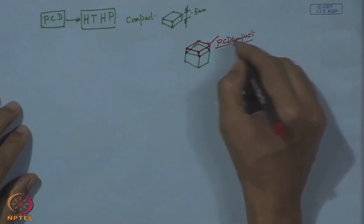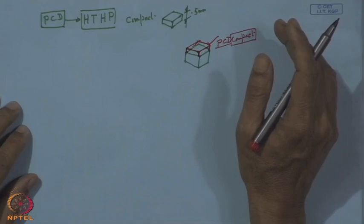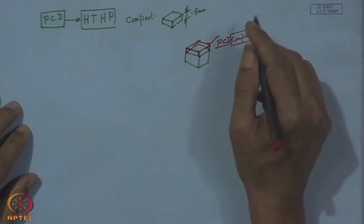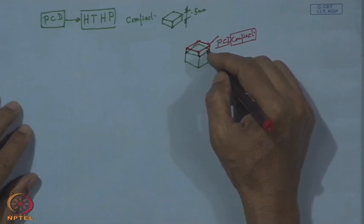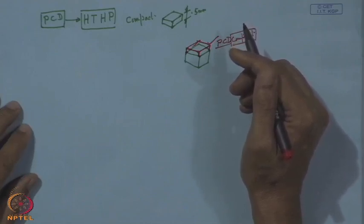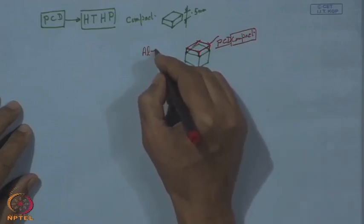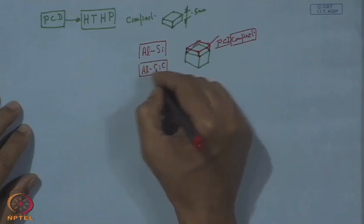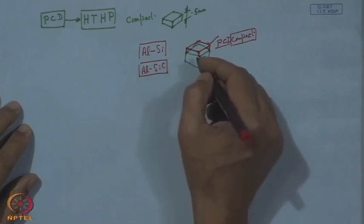The greatest advantage of PCD over natural diamond is that it has multi-directional crystallographic orientation, so the average toughness of this compact is greater than that of natural crystal. This can be used for various heavy-cut machining where high cutting forces are expected. It can be used for bulk machining of materials like aluminum composites, aluminum-silicon alloy, aluminum-silicon carbide alloy, and various metal-ceramic composites.